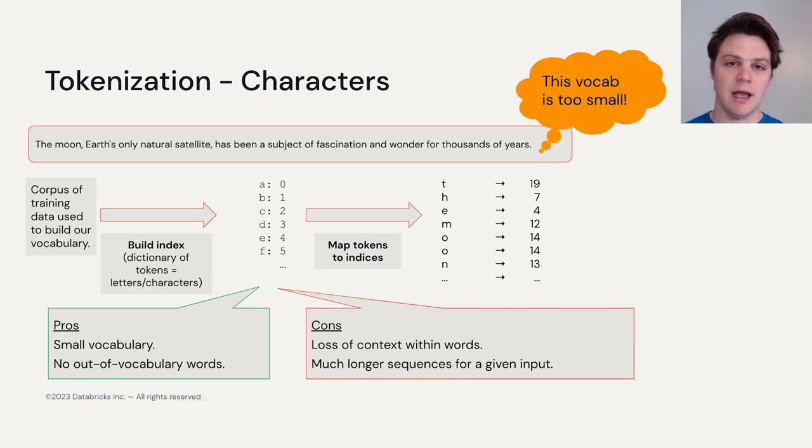Another solution to make our vocabulary much smaller would be then to just look at individual characters. If we're picking, say, the English language, we would have 26 characters for the lower case, 26 for the upper case, and then maybe some other punctuation and numerical characters as well. And so we would have a vocabulary of around 100 in size.